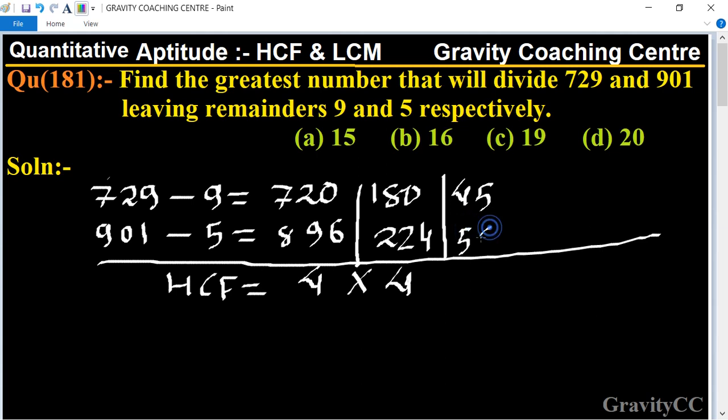45 and 56 have no other common factor than 1, so HCF is 16. Hence the required number is 16, which is the answer. Option B is the correct answer.